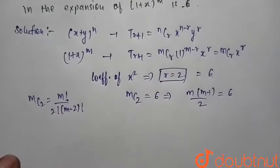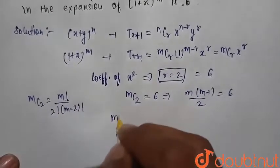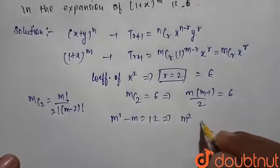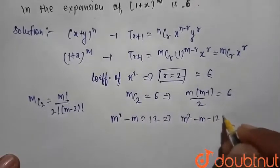We can solve this equation: m square minus m is equal to 12. So we can write here m square minus m minus 12 is equal to 0.